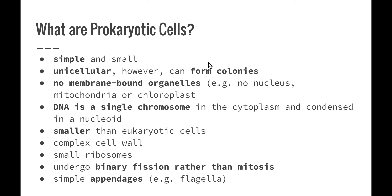Prokaryotic cells are simple and small. They're unicellular, however they can join together to form colonies. The main thing that we need to know is that they have no membrane-bound organelles — so they have no nucleus, no mitochondria, no chloroplast. DNA is a single chromosome in the cytoplasm of our prokaryotes, condensed into what we call a nucleoid.